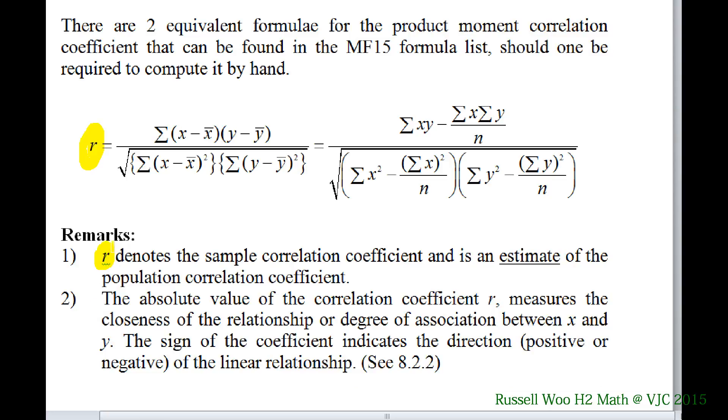r is the sample correlation coefficient. That means you collect data. Same thing—you will never know the actual correlation coefficient because you need the entire population data. So if you collect data, it will be a sample correlation coefficient.